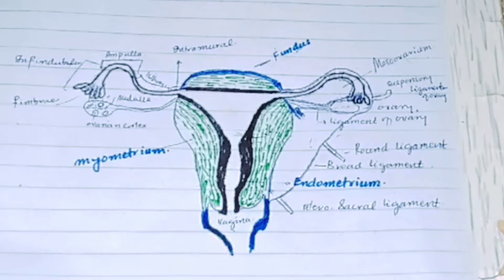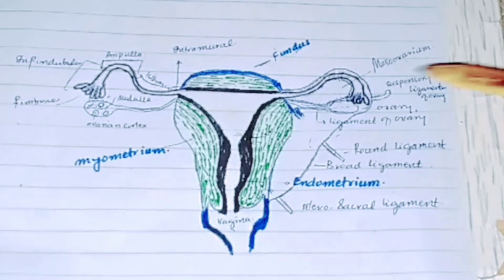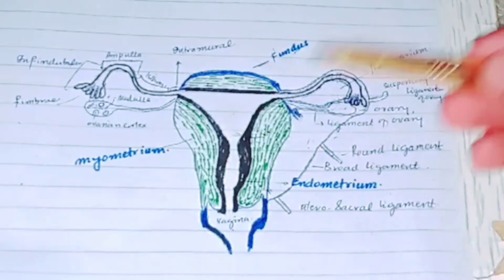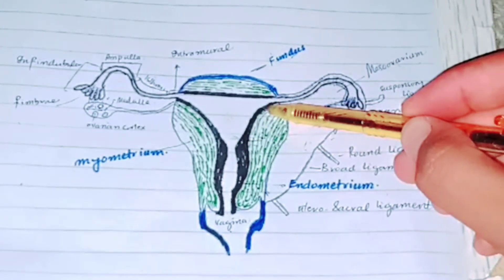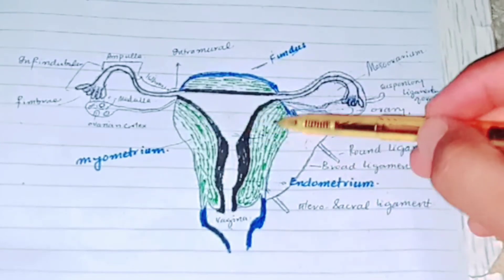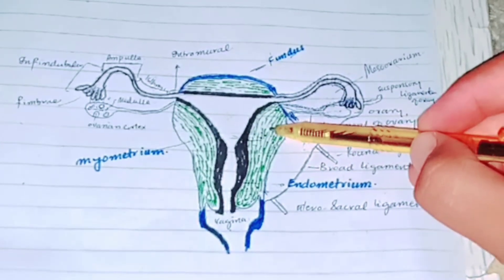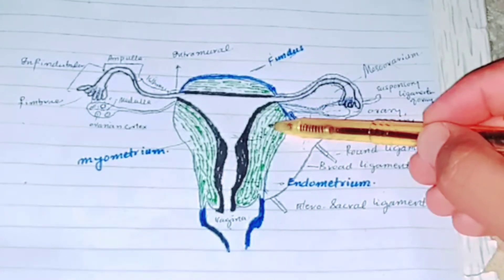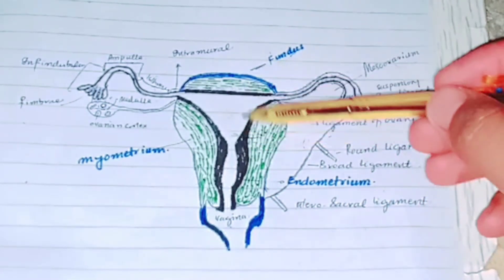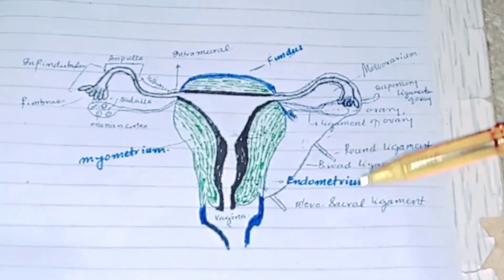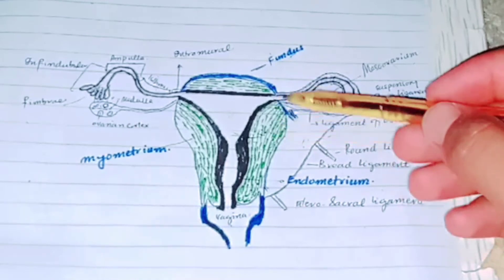There are mainly three layers of the uterus. The first, here you can see this black layer, the innermost layer is called the endometrium. The second, this green layer which is thick and made of smooth muscles and small amount of fibrous tissue, is called myometrium. The outer layer is called perimetrium, which I have not drawn here.